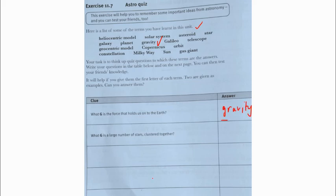What G is a large number of stars clustered together? That would be galaxy. And so on. You can write your questions and then you can answer them by yourself.